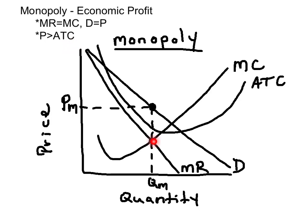On the graph, MR equals MC gives us QM, the quantity, and then we travel up to the demand curve to give us the price that the monopolist will charge for its product. Price minus ATC represents the per-unit economic profit. When you take the per-unit economic profit multiplied by the quantity, we can shade in the area of total economic profit, which is represented by the green rectangle here.